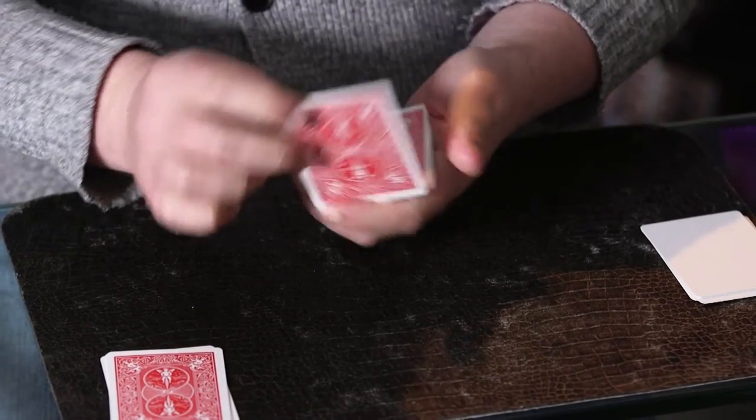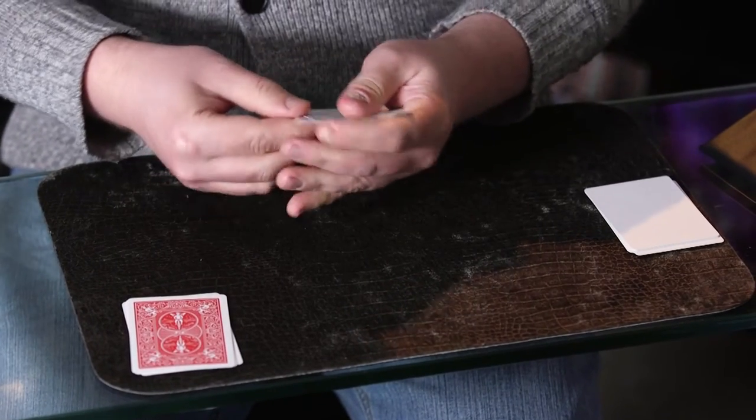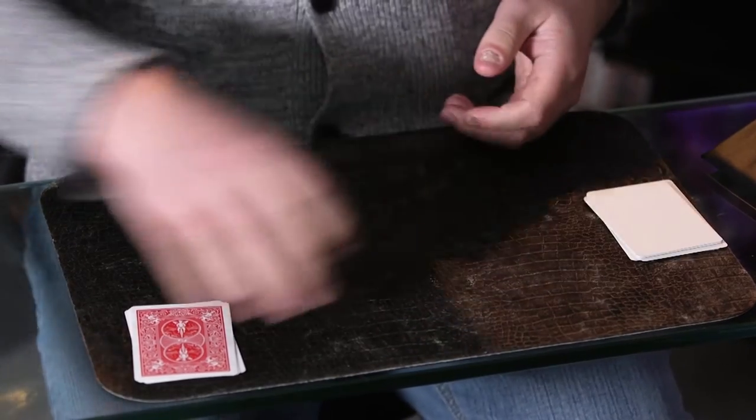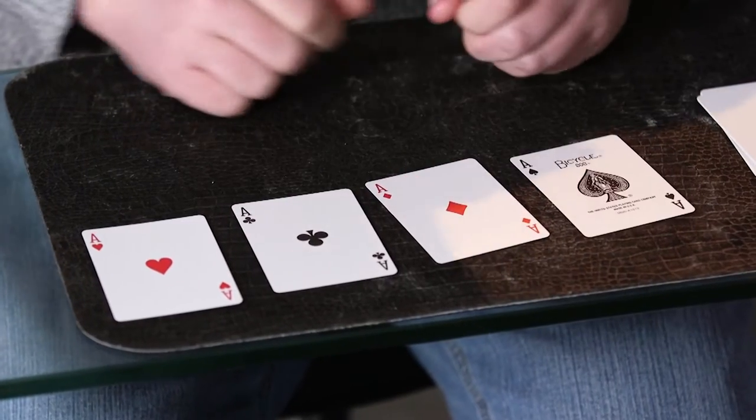This is the toughest bit though because we've got to get all three to jump across. One, two, three. If we do that then we're going to be left with our blank cards which means all the way over here are aces because you know why not?